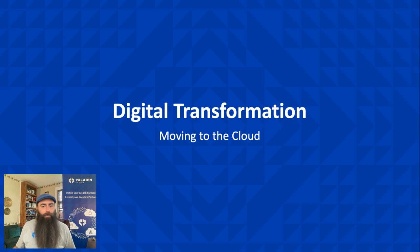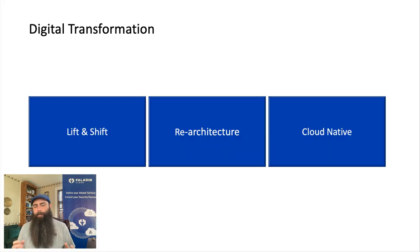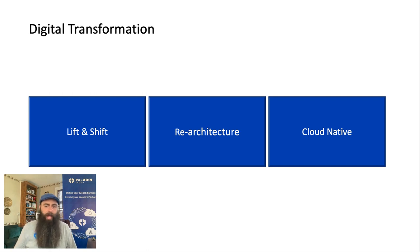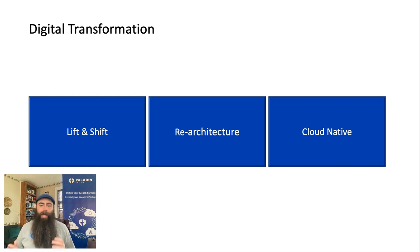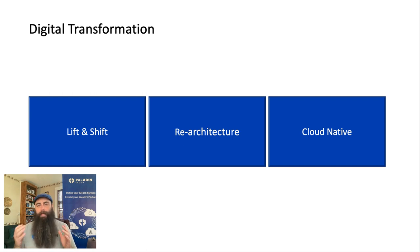Organizations began to realize the value of digital transformation, but needed to figure out how they were going to accomplish it. There are three main ways to tackle digital transformation. One is a lift and shift or migration — moving existing applications to the cloud with minimal changes; use this when the goal is to reduce costs, increase scalability, or you're under a time crunch. Re-architecture involves reimagining existing applications to take advantage of cloud-native features. And cloud-native involves building new applications from the ground up using cloud-native technologies and architectures — use this when the goal is maximum scalability, performance, and flexibility.